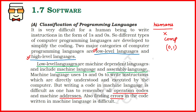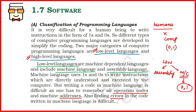Going into more detail, low-level languages are of two types: assembly language and machine code. Machine code or machine language is in the form of zeros and ones — this is the language ultimately required by and understood by the computer. Even assembly language is not directly understood by the computer. It is called low-level because, compared to high-level languages, it is closer to machine code.